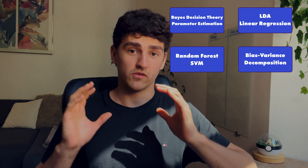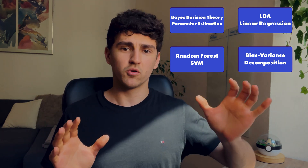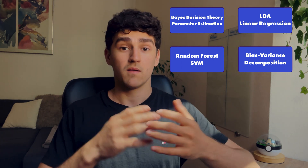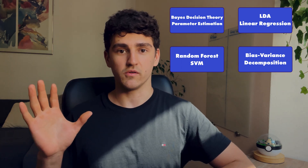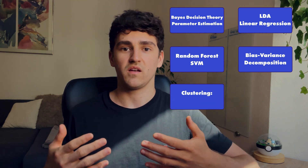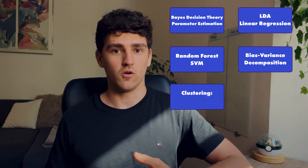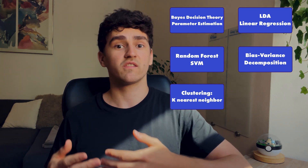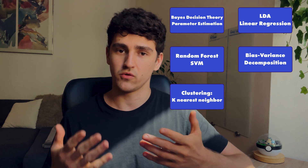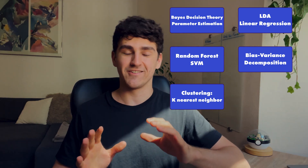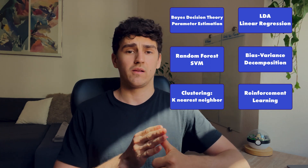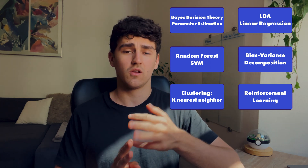Up until now we've had supervised learning — where input data has a label and those pairs are used to train the model. But what if we don't have any labels? For that, we have unsupervised learning methods like clustering. A specific algorithm would be k-nearest neighbors, which is the next thing I'd recommend looking at. After that, you can go into reinforcement learning. Some keywords there would be value iteration, value learning, Q-iteration, and Q-learning.